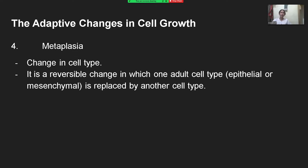Metaplasia is the change in cell type. It is a reversible change in which one adult cell type is replaced by another cell type. For example, a square cell type undergoes metaplasia and becomes a circle cell type. In short, metaplasia is about converting a specific cell type to another cell type.